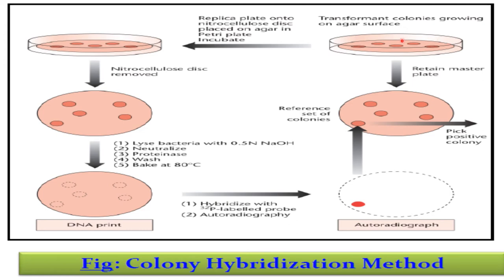For colony hybridization, the transformant colonies are grown on an agar surface. Then a replica plate is made on which a nitrocellulose disc is placed and incubated. The nitrocellulose disc is removed, the bacteria are lysed with 0.5 normal sodium hydroxide, then neutralized, and a protease enzyme is added. The disc is washed and baked at 180 degrees centigrade. It is then hybridized with a P32-labeled probe and used for autoradiography. Through autoradiography, the transformant is identified from the reference colony set, and positive colonies are picked to screen the cDNA library.